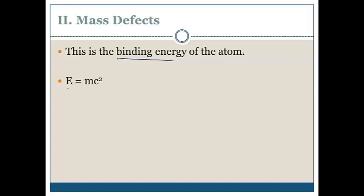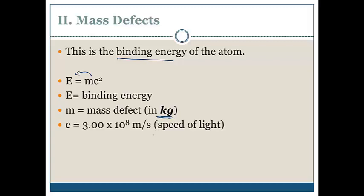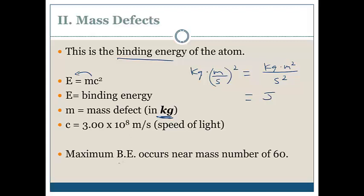E is the binding energy. Where did the binding energy come from? Well, we lost some mass, so that mass turned into the energy. M is the mass defect of the atom in kilograms. And C is the speed of light. Now notice, if you use the units you see here, mass is in kilograms. C is in meters per second, but you have to square it. So the units will turn out to be kilograms times meters squared over seconds squared. And we just said that was the same as a joule. Now the binding energy for different atoms starts to increase, but it doesn't continuously increase. It reaches a maximum near a mass number of around 60.